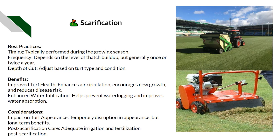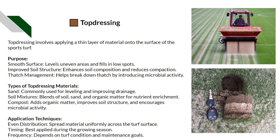Top dressing involves applying a thin layer of material onto the surface of the sports turf — usually to level off the surface or improve the soil structure. This can also help with thatch management, but it can be done incorrectly. For example, if you top dress repeatedly over layers of thatch, you end up with organic anaerobic layers within the soil where water won't penetrate, disease spores will germinate, and the grass becomes much weaker due to root rot.